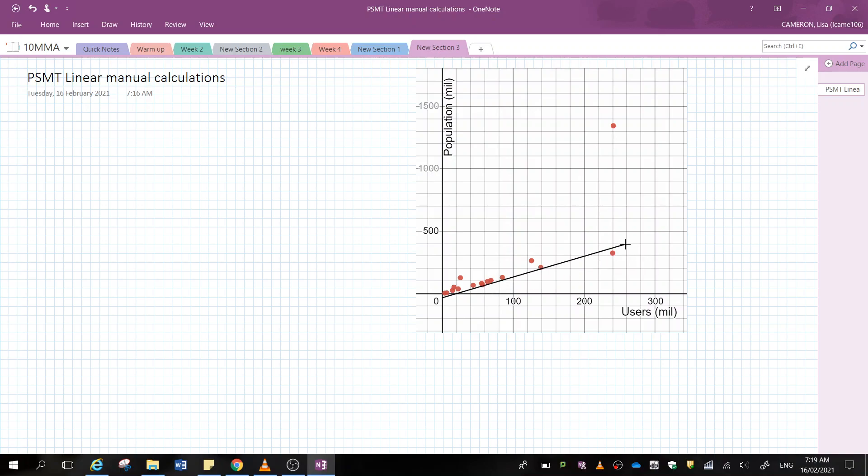Pretend like that worked. Okay, and then it's going to pass through my coordinates roughly where I think that it should pass through. I'm just going to try that again.